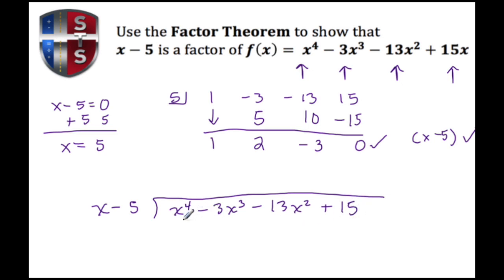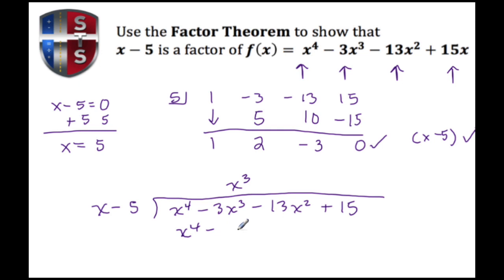Our goal is to eliminate the leading term, which is X to the fourth. We ask: what do we multiply X by to get X to the fourth? The answer is X cubed. So X cubed times X gives X to the fourth, and X cubed times negative 5 gives negative 5X to the third.